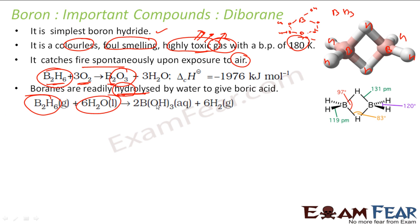When B2H6 diborane reacts with water, it forms B(OH)3 — boron hydroxide — and gives hydrogen gas. This is nothing but boric acid. So the moment diborane reacts with water, it gives boric acid easily. If you want to prepare boric acid, you can do it from diborane itself by hydrolyzing it with water.